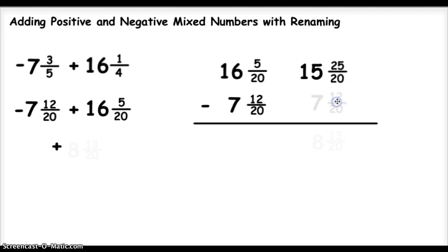Now I just subtract the other fraction. I don't change that at all, so I'm going to subtract 7 and 12 20ths. Now I'm able to do my subtraction. 25 minus 12 is 13, so the fraction is 13 20ths. 15 minus 7 is 8, so the fraction is 8 and 13 20ths. My answer for this problem will be a positive 8 and 13 20ths.